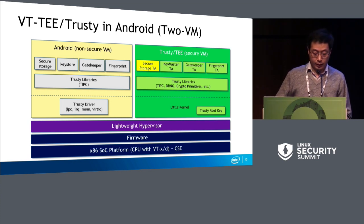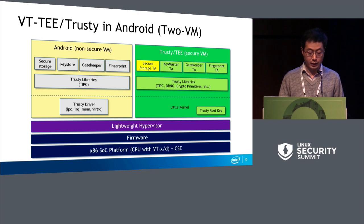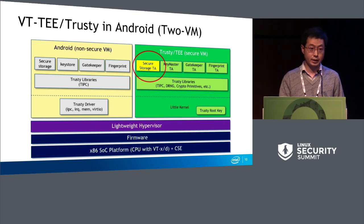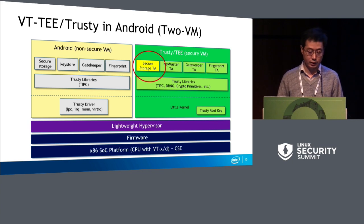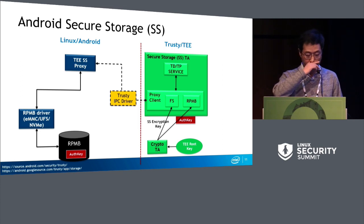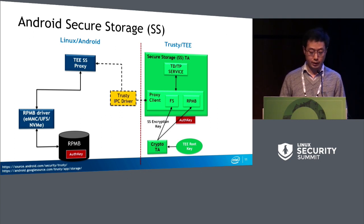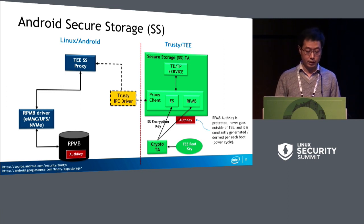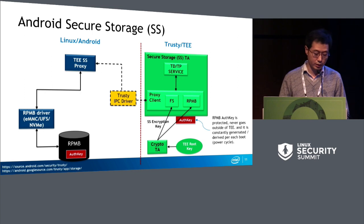In this block, Trusty TEE provides services. There are a couple of TAs — trusted applications — here. I'm focused on the secure storage TA, which can manage the authentication key. We use this secure storage to manage the authentication key, and we also need to provide encryption to ensure data confidentiality. The secure storage TA can derive the RPMB authentication key and also get the secure storage encryption master key, which is refreshed after each reboot. These two keys must be protected in the TEE solution so that Android cannot access them.